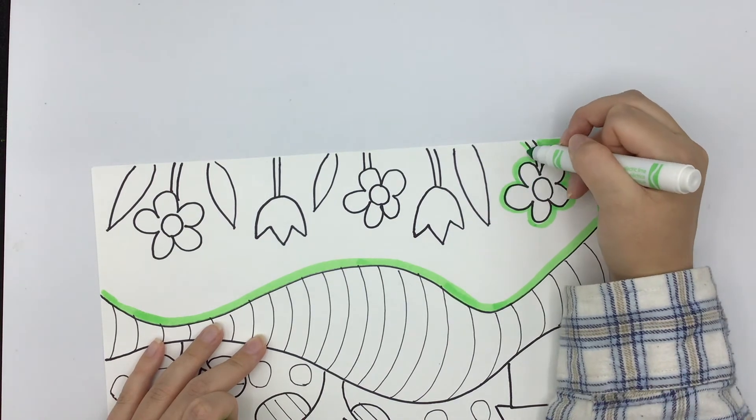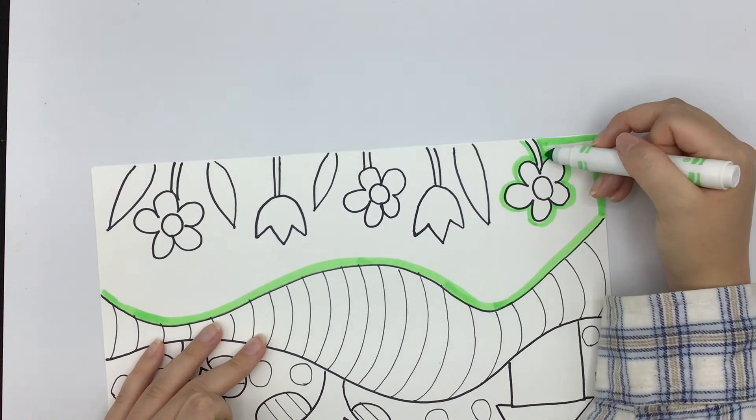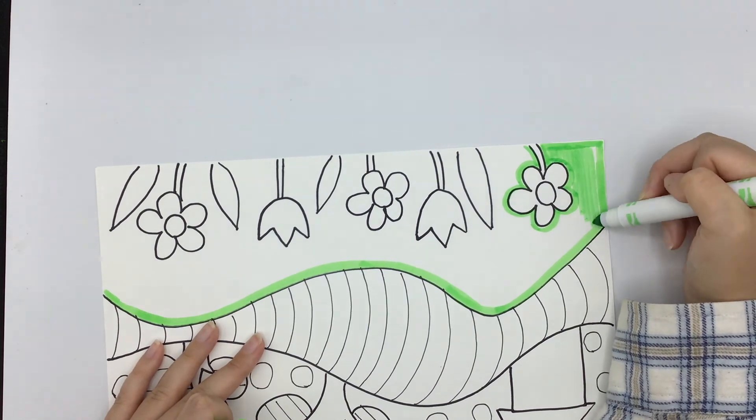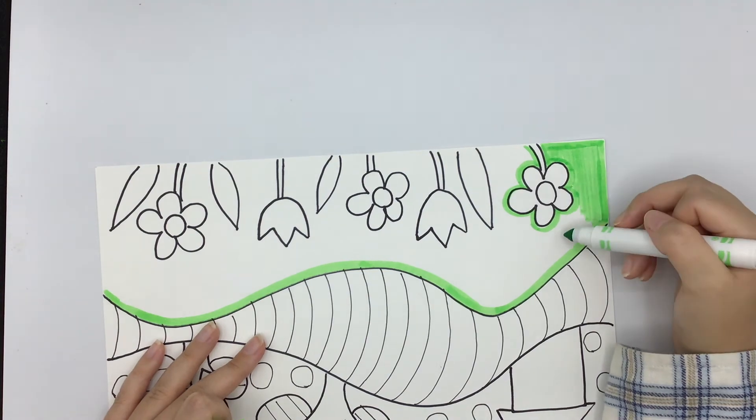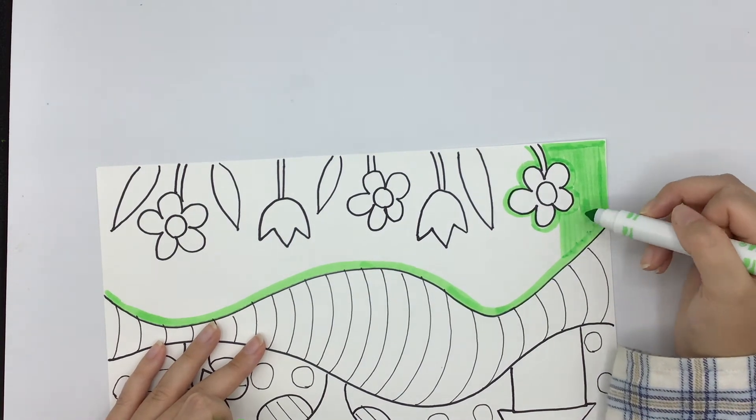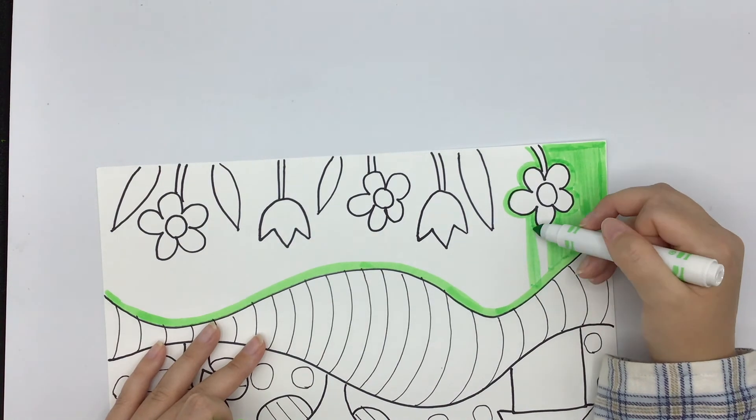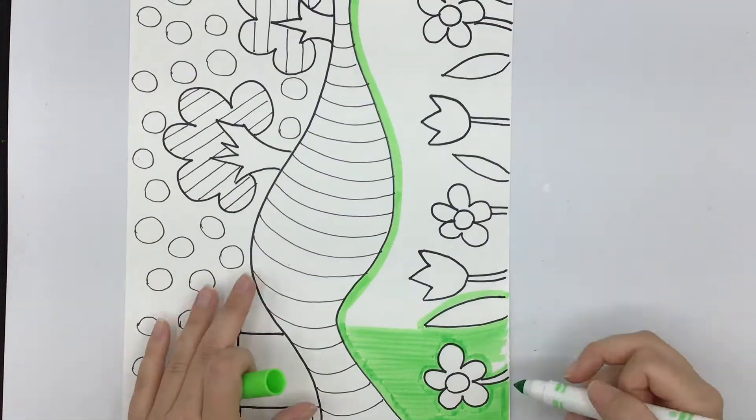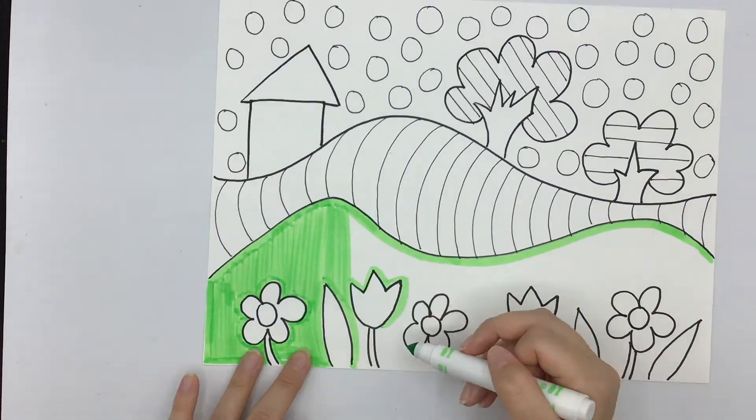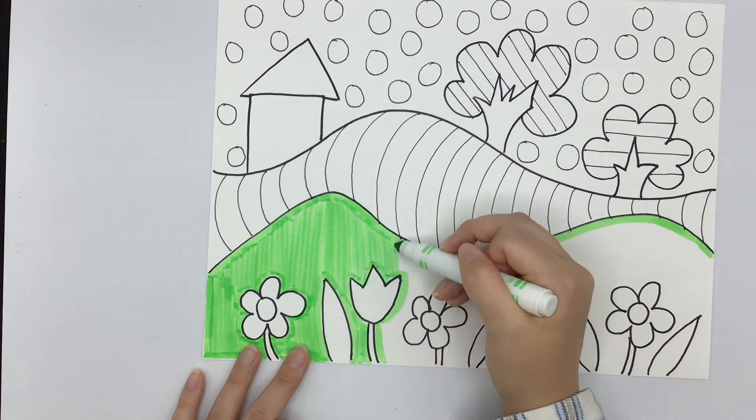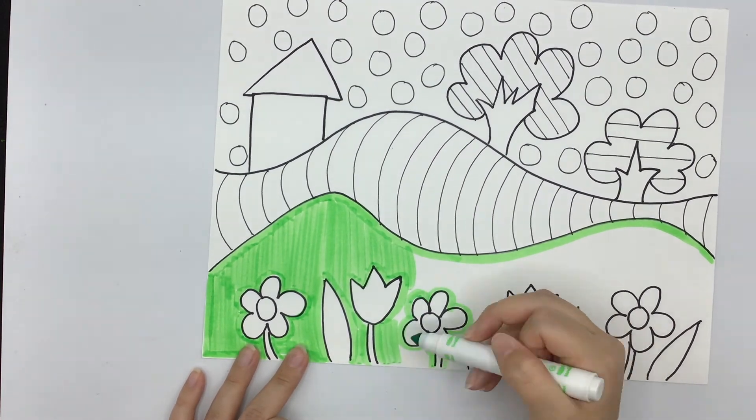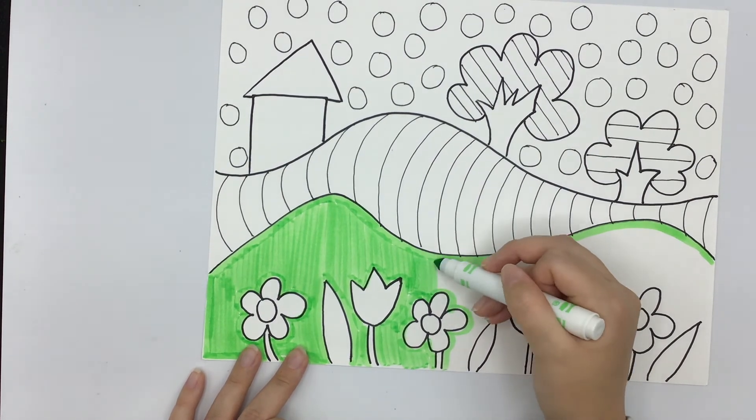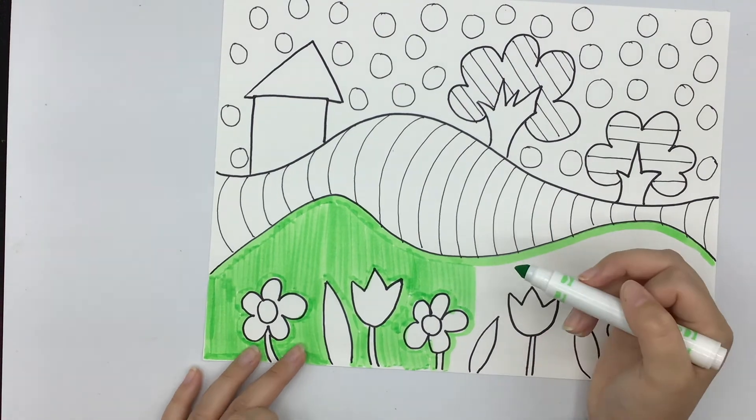And then after I've done that, then I can fill in my space. And I also like to fill in my space with kind of these little lines when I'm using markers because it makes it look a little nicer and neater. We're never scribbling. We always make sure to do our best job and stay inside of our lines.